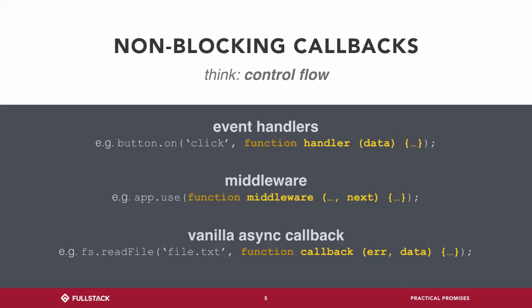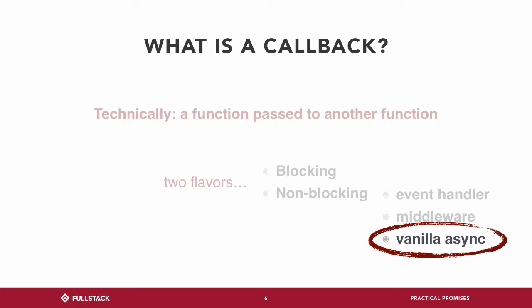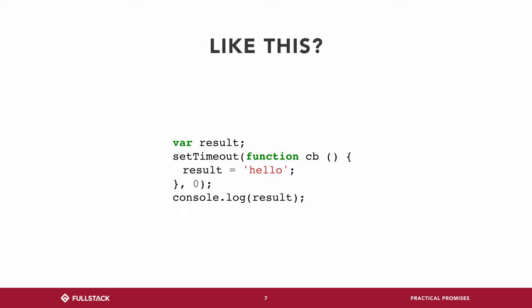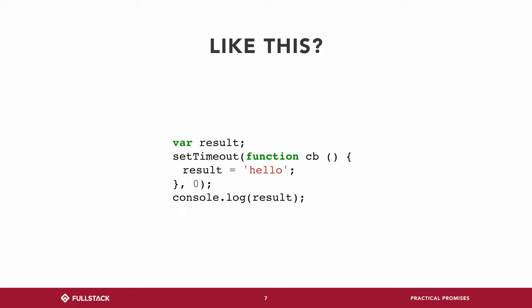We're given this callback, and somewhere in the FS library there's some other thread. When we end up getting the result, it's added to the event loop, and we know at some point in the future we're going to find out whether or not we were successful. So we've got blocking and non-blocking, and the ones we're interested in are the vanilla async — think about reading from a file. If you do console.log result after calling setTimeout, what's going to show up? Undefined. Even if you do a setTimeout of zero, this is a non-blocking callback.